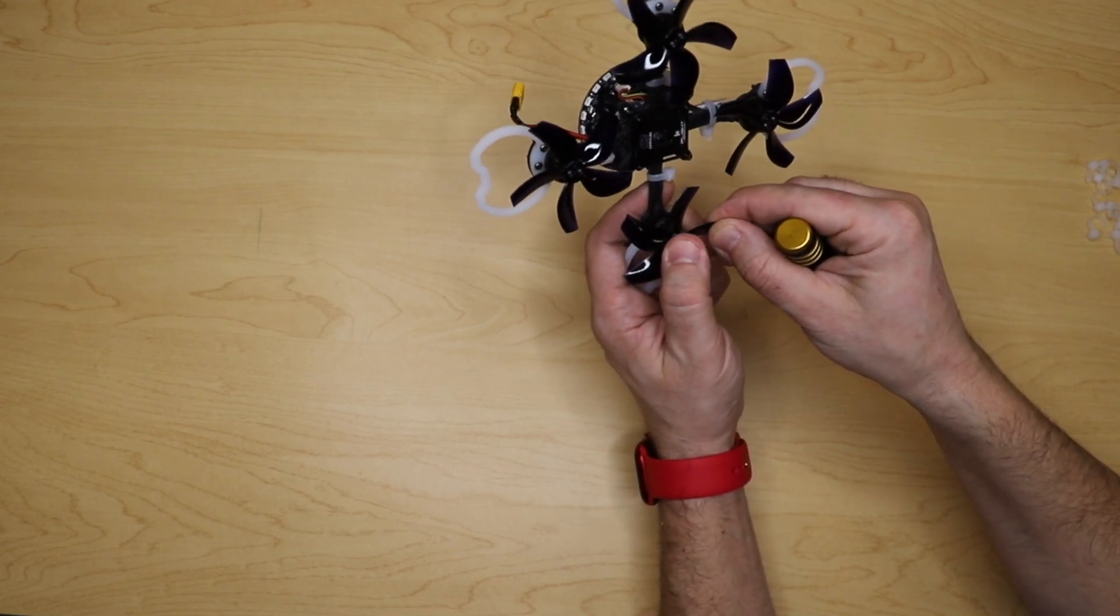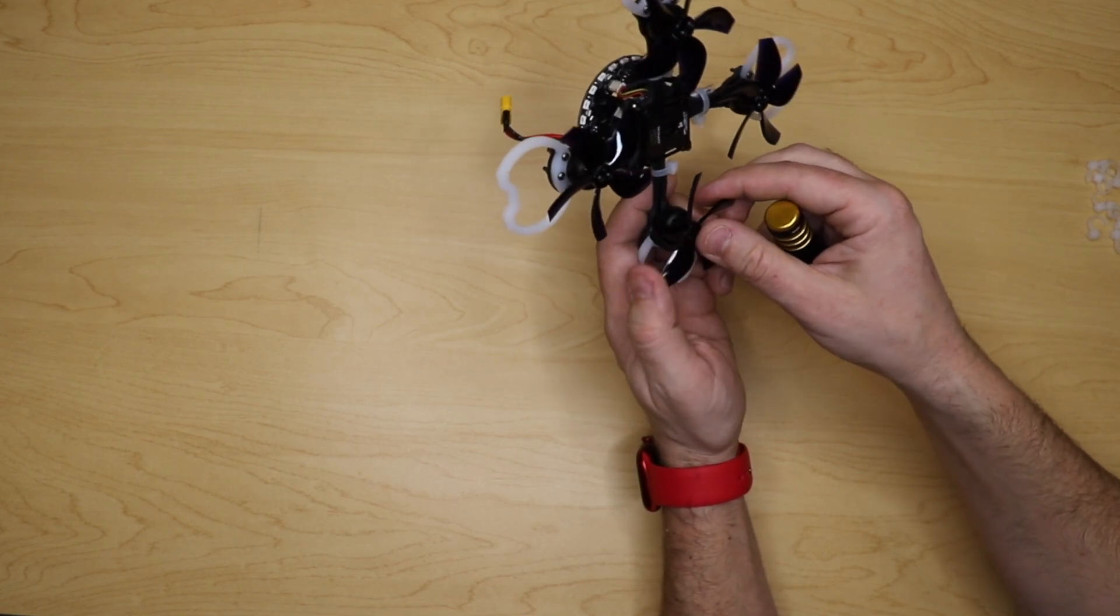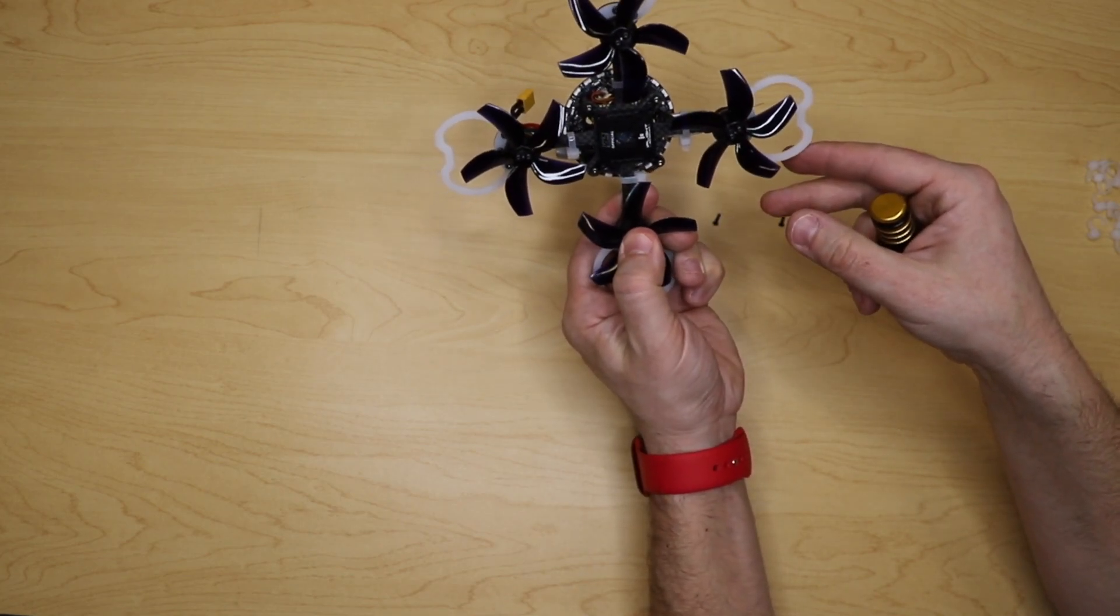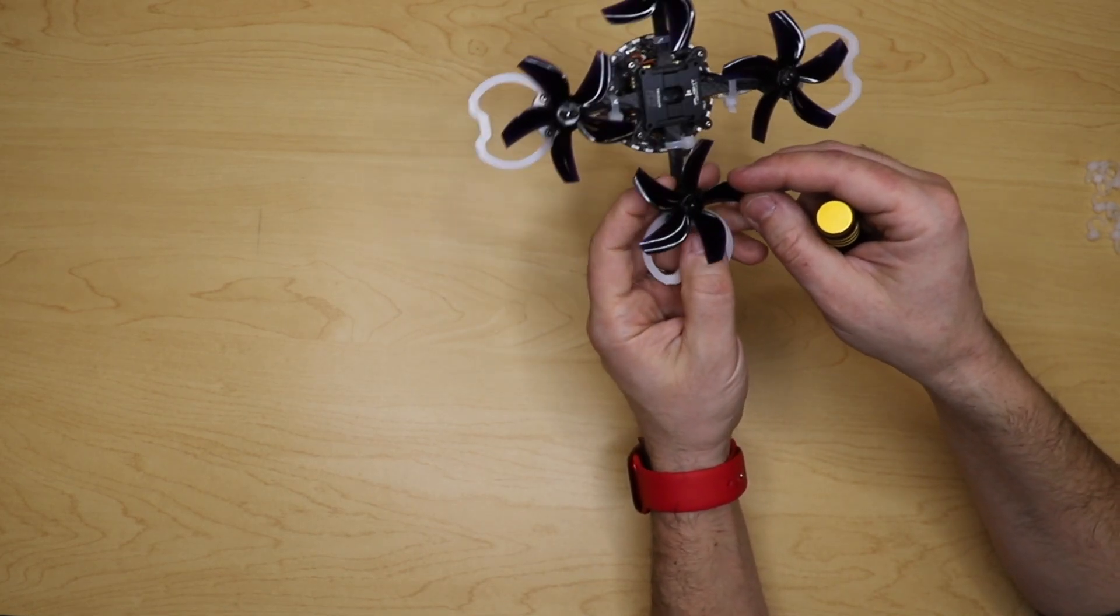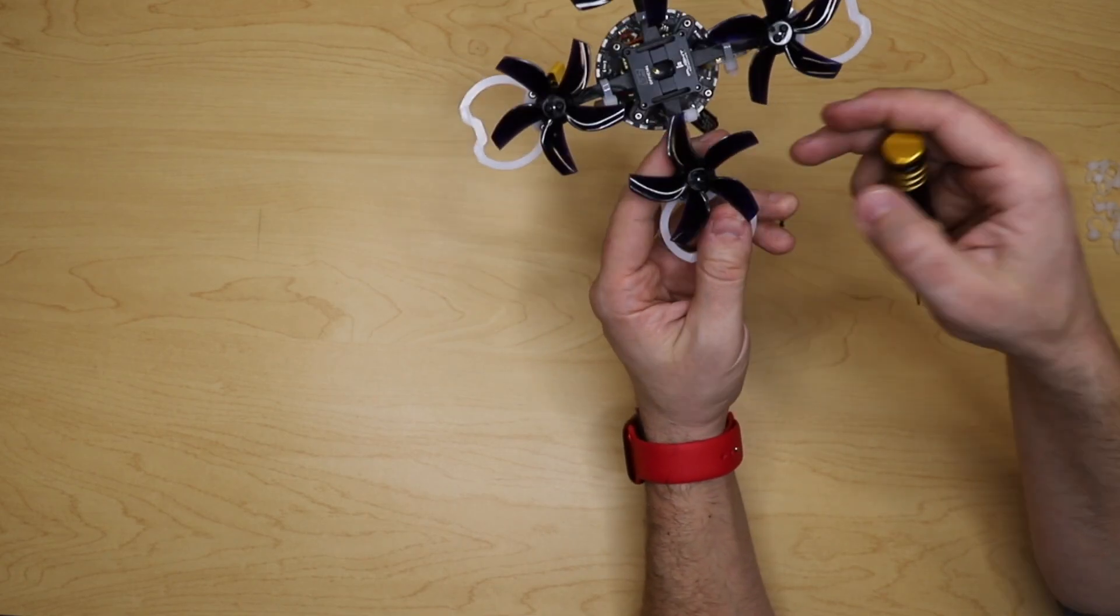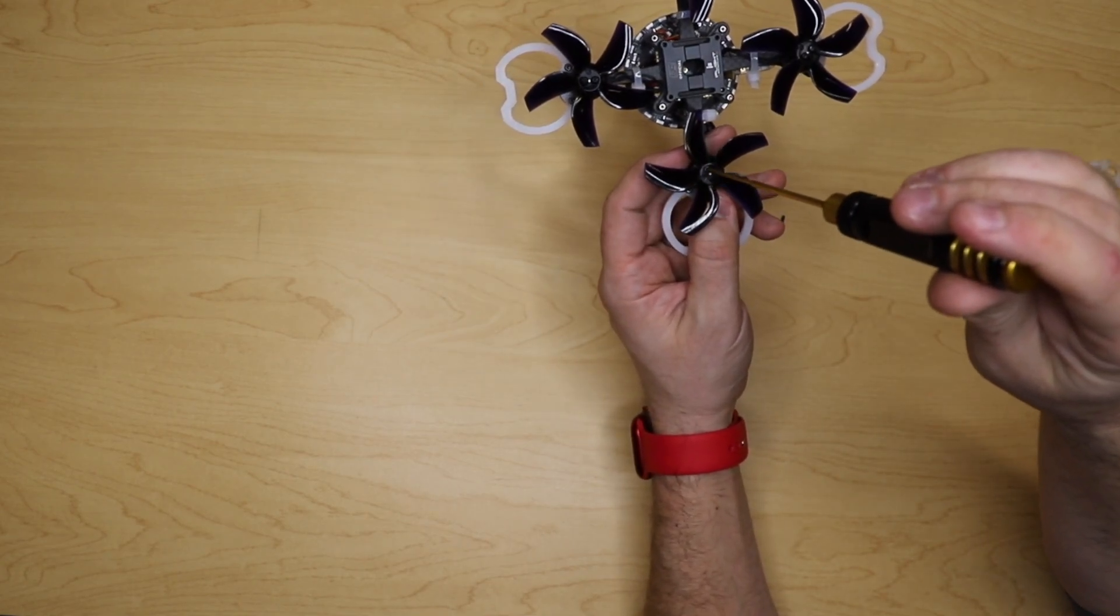And once you get it in, this is actually kind of the more tricky or difficult part. After you push it all the way down, you have the two screw holes that are in the motor that you need to line up with these two holes right here.